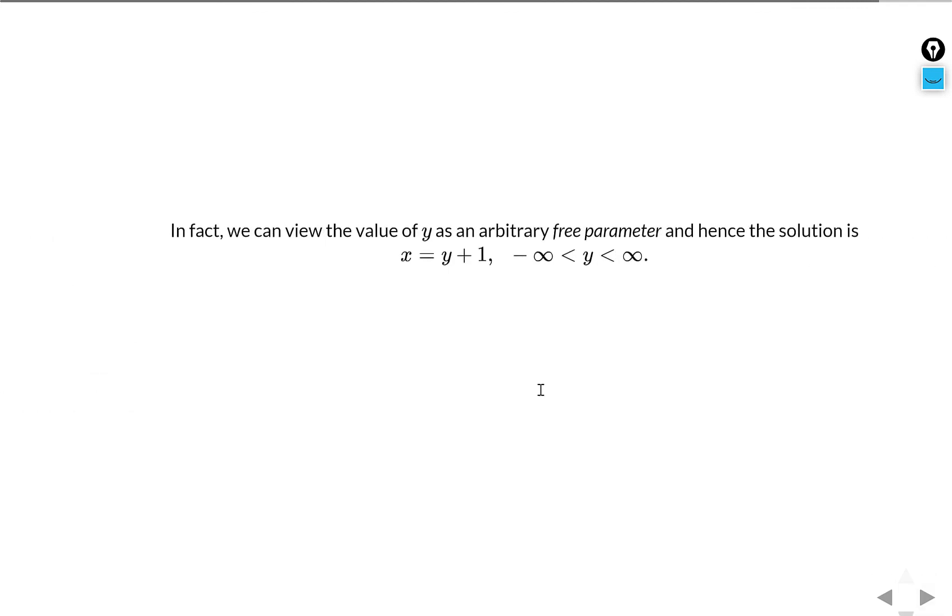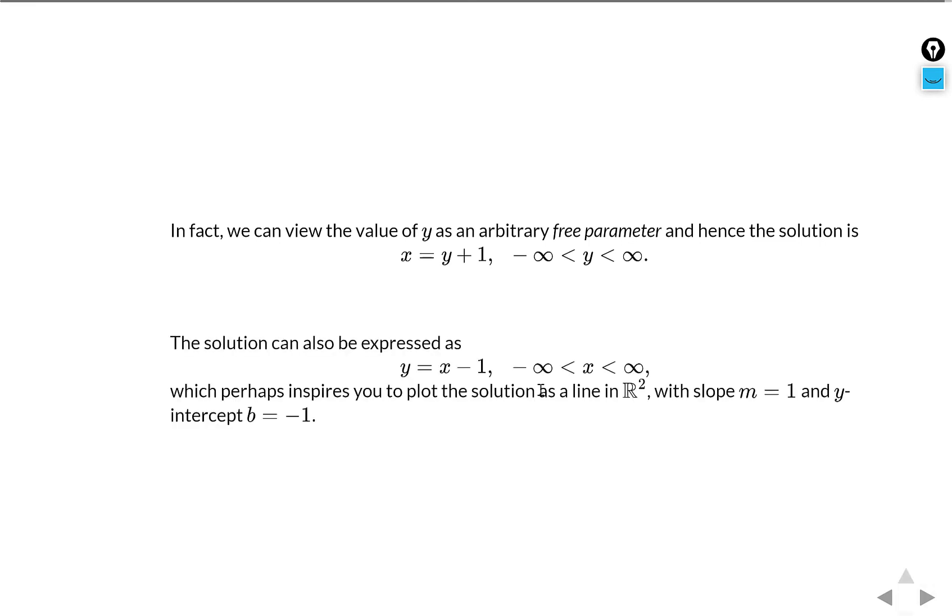y can take any value in the real line. So x equals y plus 1. We can also write it as y equals x minus 1 and say x can take any value in the real line. So y equals x minus 1 is a line in R2. You should go ahead and plot this in a notebook for yourself. This is a line with slope 1 and y intercept minus 1.